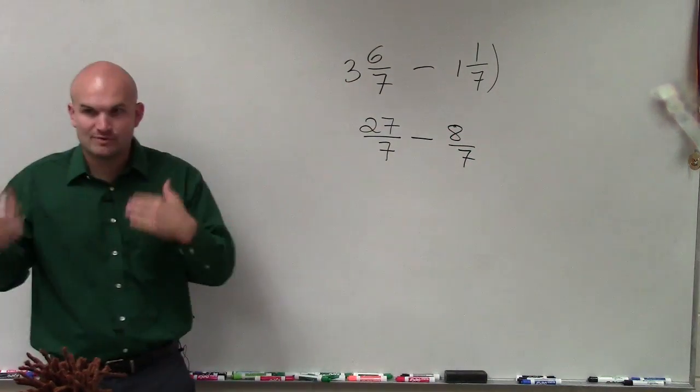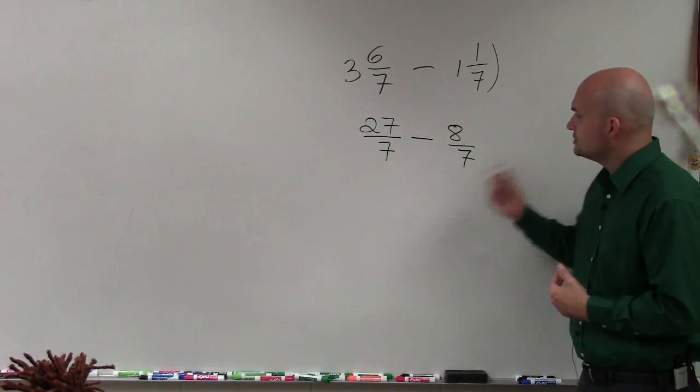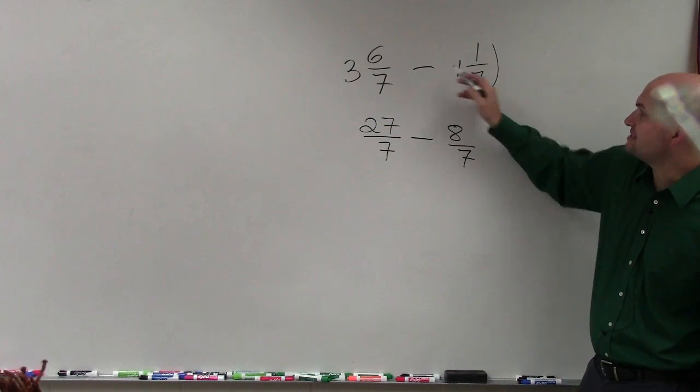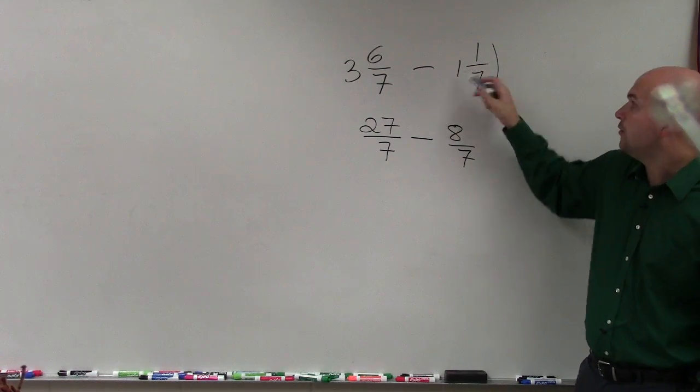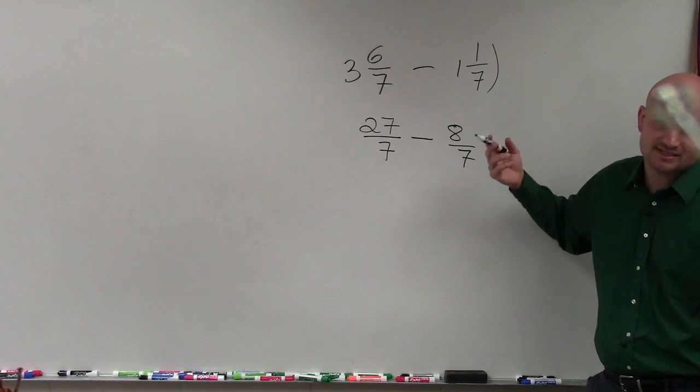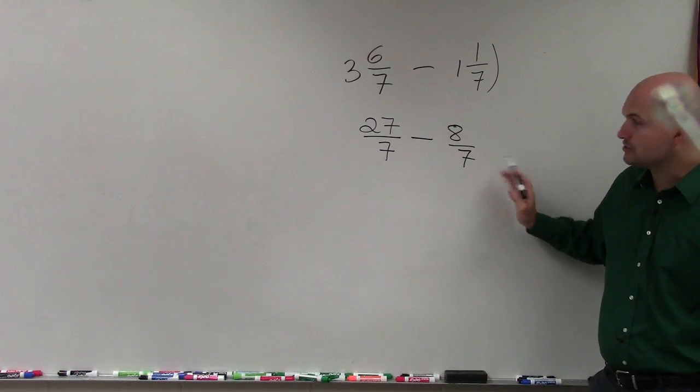So if you guys can disregard the negative sign at that point in time. Because if you added the negative, that would be 7 times negative 1, which would be negative 7 plus 1, which is negative 6. 1 and 1 seventh is not 6 over 7, that's 6 sevenths, that's not improper. So it's 8 sevenths. Now we can just go ahead and subtract.